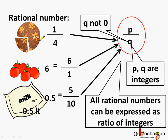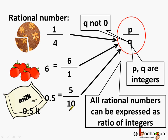Here we have different rational numbers: 1 by 4, which is a fraction; 6, a whole number or natural number; and a decimal number. All these numbers are rational numbers as all of them can be expressed as a ratio of integers. 1 by 4 is already in this form, 6 can be written as 6 by 1, and 0.5 can be written as 5 by 10. So all these are rational numbers.